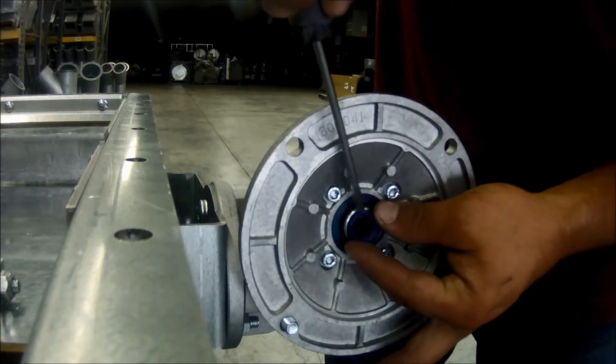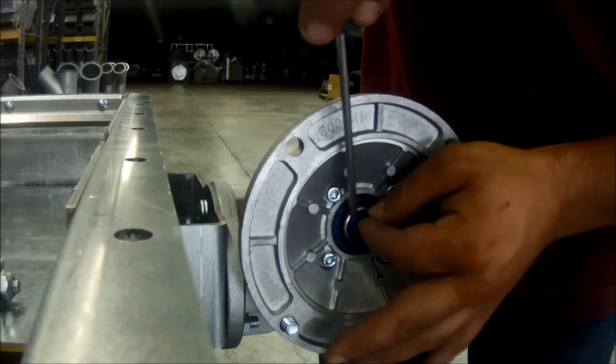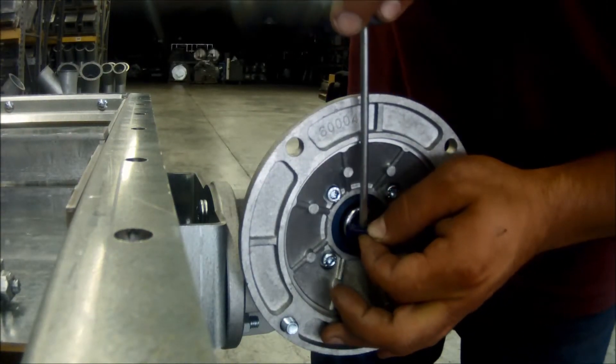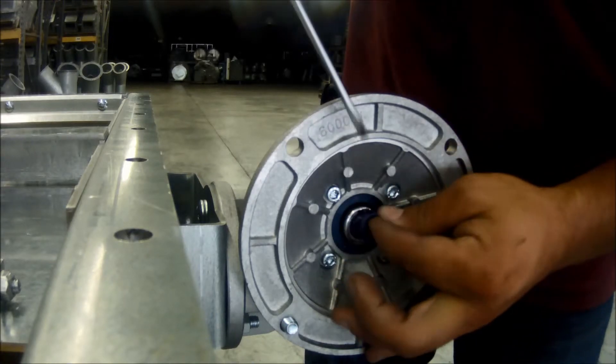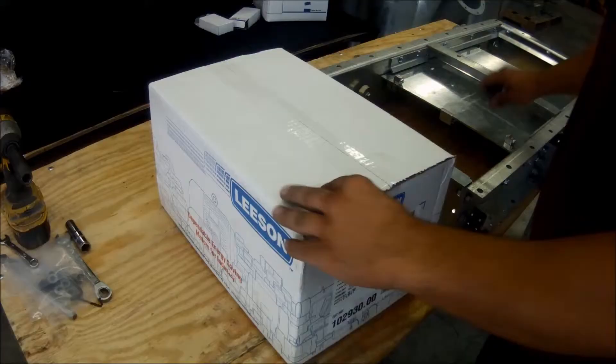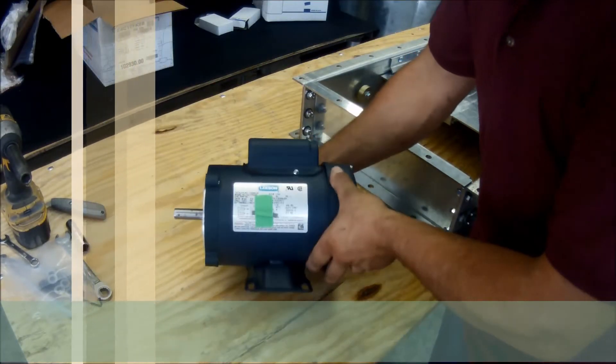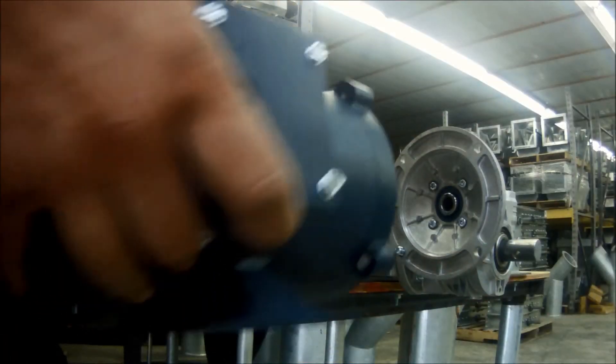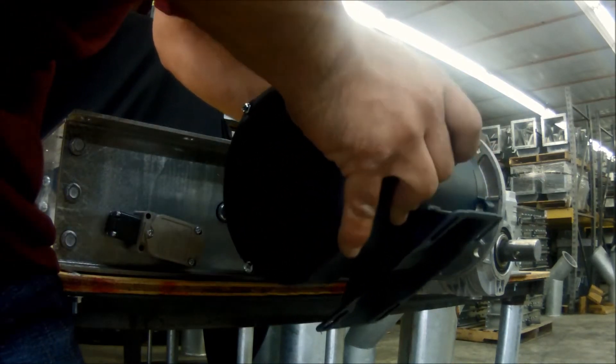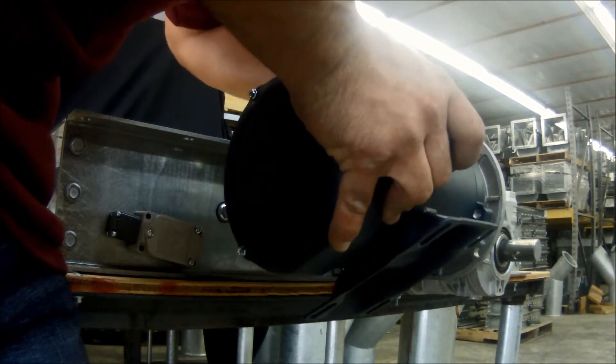Before we can install the motor, we must remove the blue plug in the larger end of the gearbox that the motor will slide into. Once the blue rubber plug is removed, we can install the motor. Underneath the green piece of tape on the motor is the keyway. Insert the keyway onto the motor shaft and align the motor shaft and keyway into the gearbox.